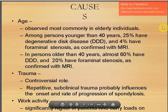Regarding causes: age is the most important factor. Among persons younger than 40, 25% have degenerative disc disease (DDD) and 4% have foraminal stenosis on MRI. In persons older than 40, almost 60% have DDD and 20% have foraminal stenosis confirmed with MRI.